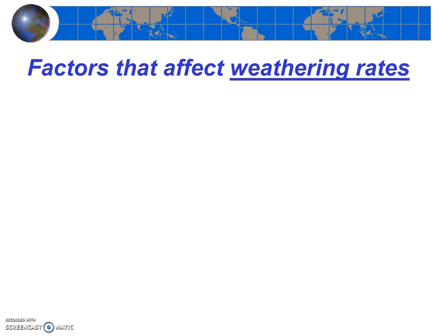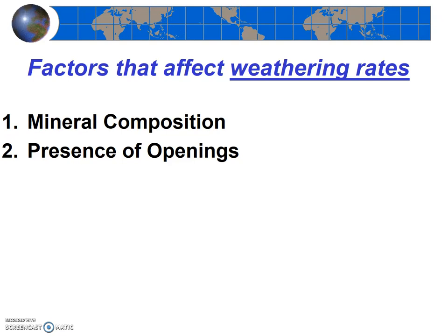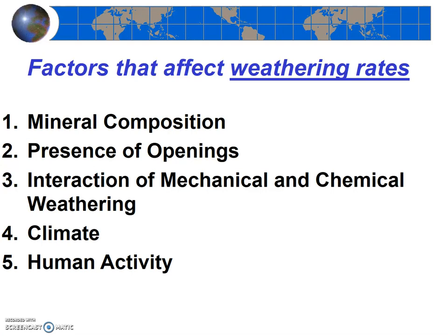Now I'd like to briefly note some general factors that might affect how fast a rock weathers. I'm going to list five factors here so that you can get them into your notes, and then we'll go back and discuss each one in more detail: mineral composition of the rock, the presence of openings like cracks, faults, and pores, the interaction between mechanical and chemical weathering, climate, and human activity.